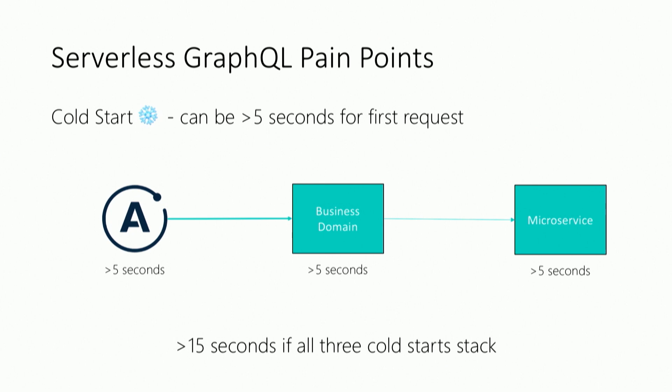One of the first pain points is really around the cold start. With serverless you actually have a container being initialized for you, and it initializes more containers as you scale up. If we put serverless at each piece of our architecture, there's a cold start to spin up that container for the first request. If all of those chain together across multiple serverless pieces, you can end up with a long cold start. You really need to think about the application use case and how your users will be using it.